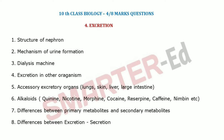The second question is the mechanism of urine formation, which has four steps and is very important. Third is dialysis — also called the artificial kidney. Fourth is excretion in other organisms, presented in table form in the textbook, important for four marks. Fifth is accessory excretory organs — what excretory products are excreted by the lungs, skin, liver, and large intestine.